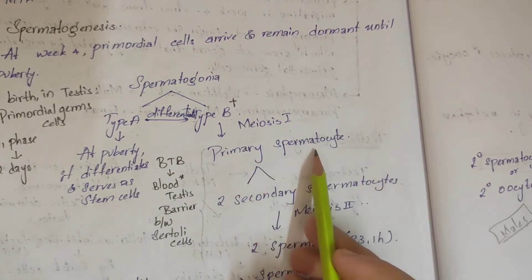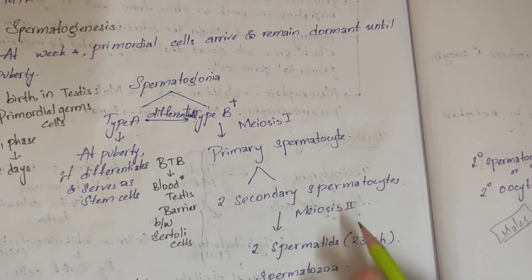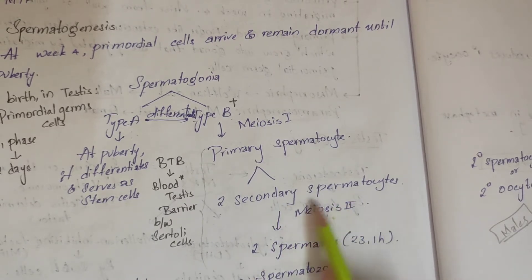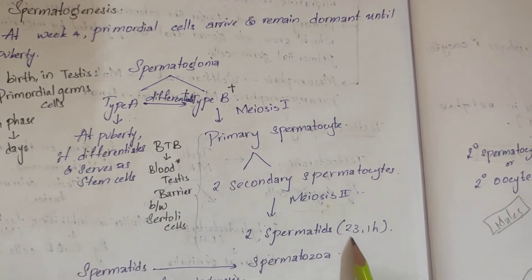The differentiation results in type B. Type B undergoes meiosis 1. In meiosis 1, primary spermatocytes differentiate into two secondary spermatocytes.